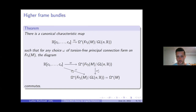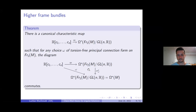You choose your connection form omega, which corresponds to a section from one-frames to two-frames equivariant under the action of the general linear group, so it descends to the quotient, and you get this commuting diagram. So far this isn't introducing anything particularly new — it's just a new perspective on a well-known phenomenon, but one that proves to be very useful for foliations.